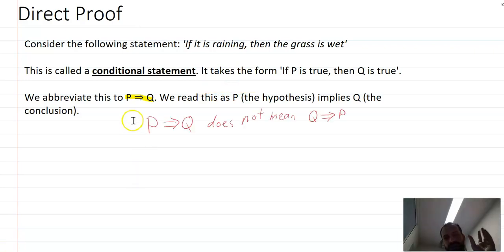You might be tempted to think about that arrow as an equal sign but it's not an equal sign. It's pretty easy to see why. P implies Q does not mean that Q implies P. So for instance, if it is raining then the grass is wet. That arrow only works one way because we can't say if the grass is wet then it is raining, because maybe someone just turned the sprinkler on. There might be other reasons why the grass is wet.